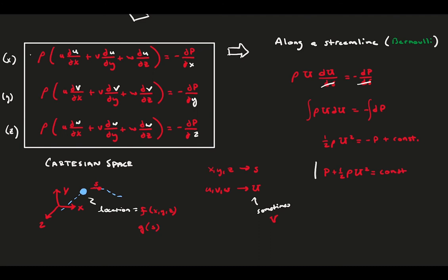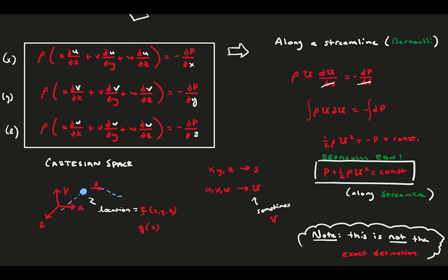Putting everything together, we have the Bernoulli equation along a streamline. Note this is not a formal derivation, and it skips some important steps in how we transform from the Cartesian space to the streamlined space.